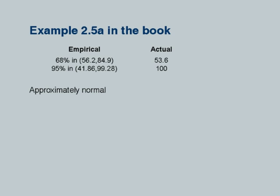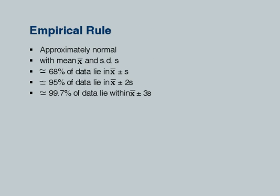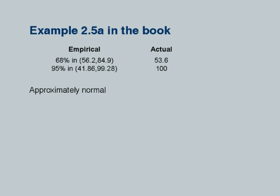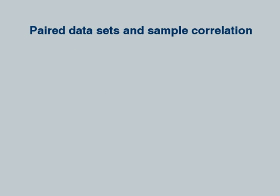For example 2.5a in the book — scores from a statistics exam — the empirical rule predicts 68% within ±S and 95% within ±2S, but the actual values are 53.6% and 100% respectively. Whether to call it approximately normal depends on how close the actual values are to the predicted ones.